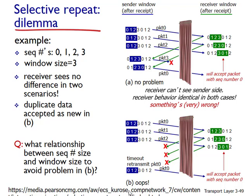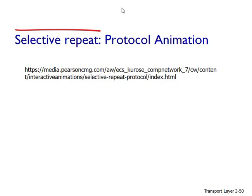Clearly, a window size that is one less than the size of the sequence number space won't work. But how small must the window size be? A problem in your textbook will ask you to show that the window size must be less than or equal to half the size of the sequence number space for selective repeat protocols. At the companion website, you will find an applet that animates the operation of the selective repeat protocol.